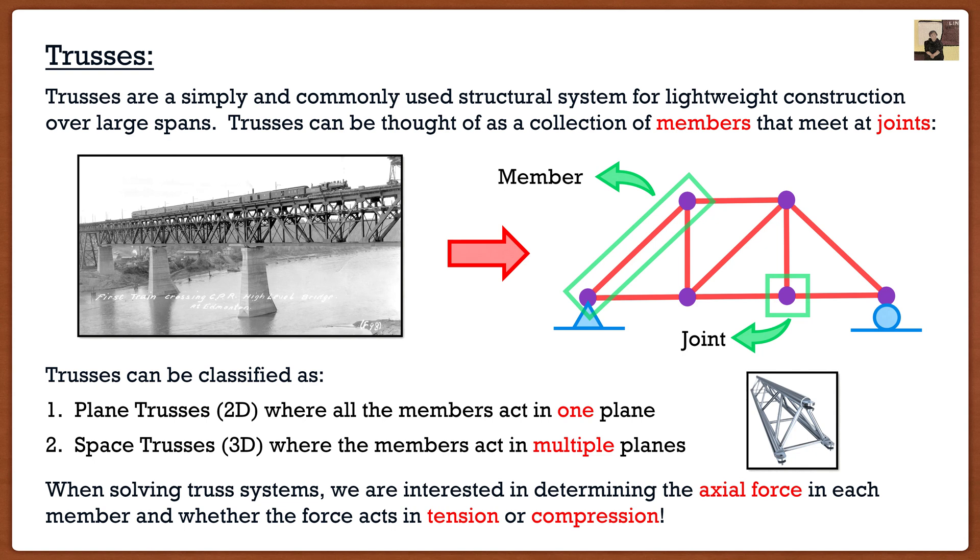When we solve truss systems, we are interested in two things. That's going to be the goal of these next couple videos: determining two things in trusses. The first is the axial force, the magnitude. Is it 100 kilonewtons, 200 kilonewtons, or if you're American, 100 pounds or 200 pounds? And then the second thing is whether the force acts in tension or compression. Because if we're designing for tension, it's actually going to be different than if we designed for compression.